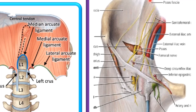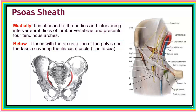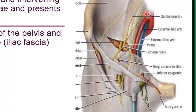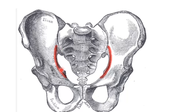From the point above, this fascia forms a ligament called the medial arcuate ligament. Laterally, this fascia blends with the anterior layer of the thoracolumbar fascia. Medially, this fascia attaches to the lumbar vertebrae and the intervertebral discs between the bodies of these vertebrae. And finally, distally, this fascia fuses with the arcuate line of the pelvis and also with the fascia covering the iliacus muscle, called the iliac fascia.